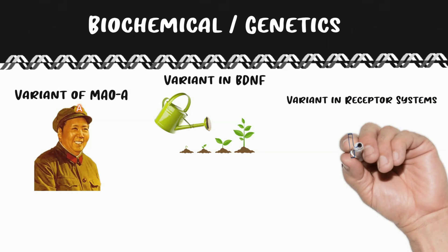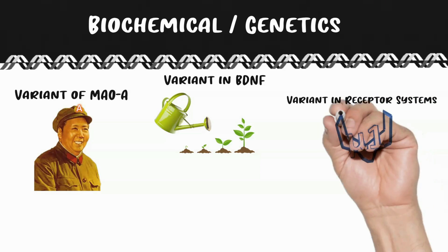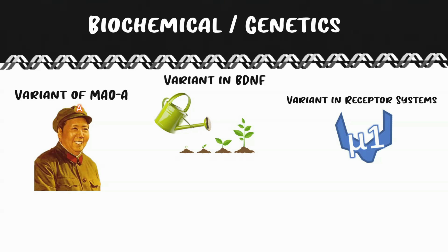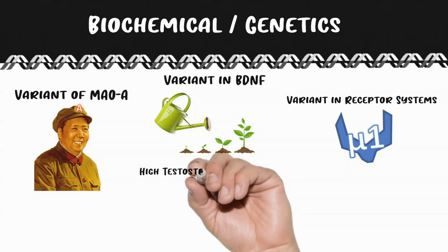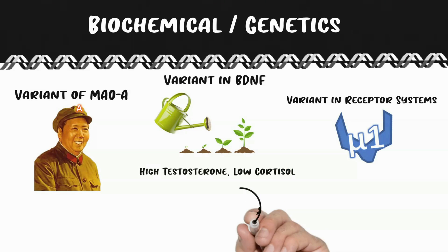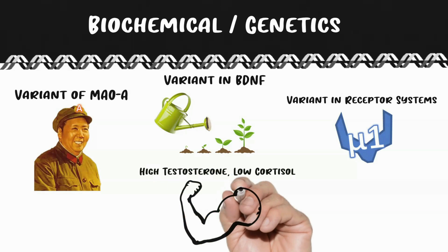Abnormalities in receptor systems are also linked to psychopathy. For example, variations in the serotonin transporter yield different traits and susceptibilities. One example is 5-HTTLPR — the long allele for the serotonin transporter — which is protective against internalizing disorders but may increase susceptibility to psychopathy. There's also evidence that dysregulation of the endogenous opioid system is linked to increased susceptibility. Lastly, high levels of testosterone and low levels of cortisol are linked to psychopathy, since testosterone is involved in approach-related behavior, reward sensitivity, and fear reduction.